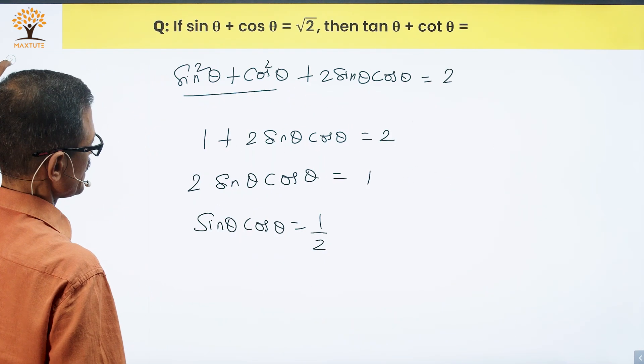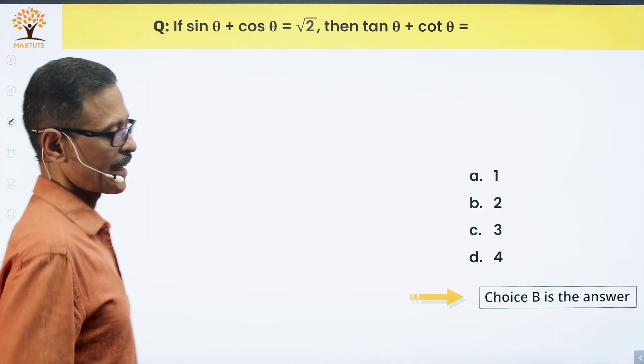So the value of tan theta plus cot theta is equal to 2. Choice B is the correct answer to this question.